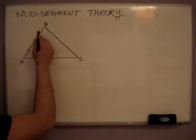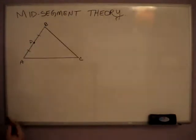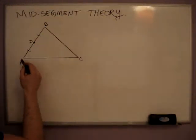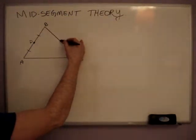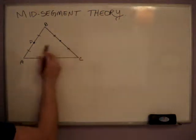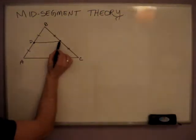We label this one D, so segment DB is congruent to DA, so it bisects that in half, and will actually bisect the line across from it, so it's going to go right across, this is a mid-segment line.